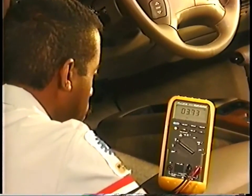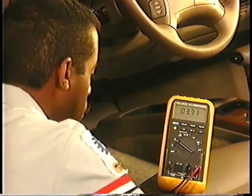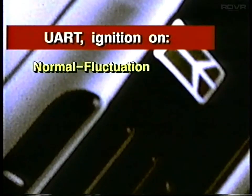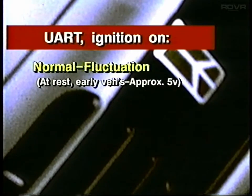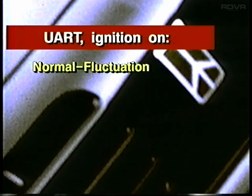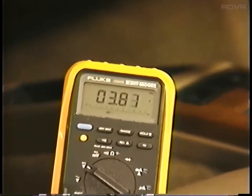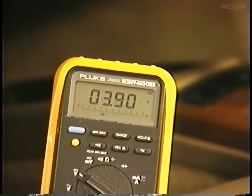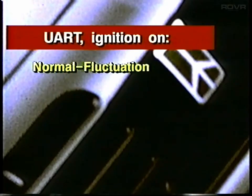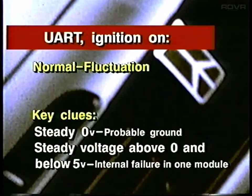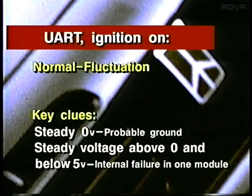With the ignition on, read voltage. With the EWERT system, voltage should fluctuate somewhere between zero and five volts. In an older vehicle that has only the PCM on its EWERT line and therefore no steady flow of communication, you could catch the system at rest at approximately five volts. But on recent cars, what you'll see is fluctuation. In real time, those normal highs and lows pass too quickly to be displayed, so you'll probably see a fluctuation of only one or two volts. A steady reading of zero volts is most likely to indicate a ground somewhere in the system. A steady voltage somewhere above zero and below five volts, such as 2.8 or 3.6, would indicate a failure in the communication chip of one module.